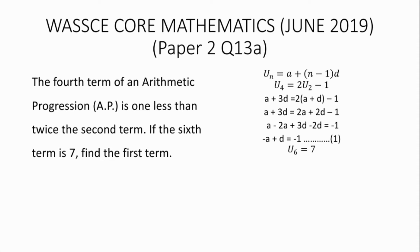From the second part of the question, the sixth term is 7, so u_6 equals 7. Using the formula, u_6 equals a plus 5d, so we can say a plus 5d equals 7. We name this Equation 2.